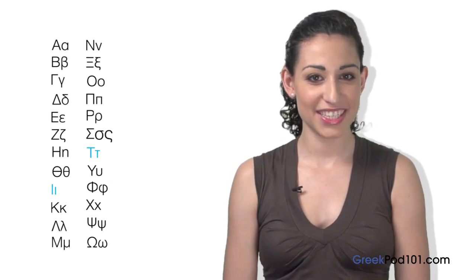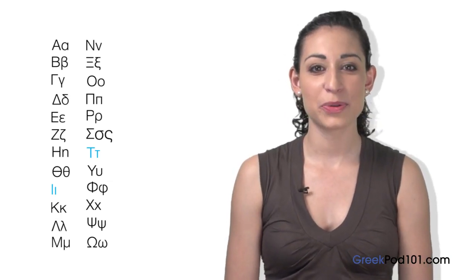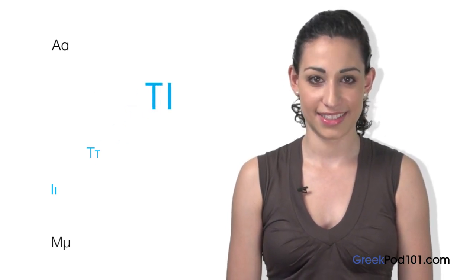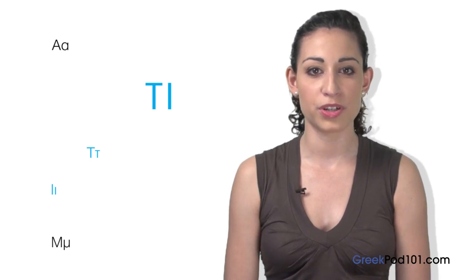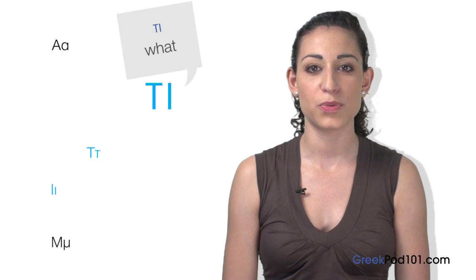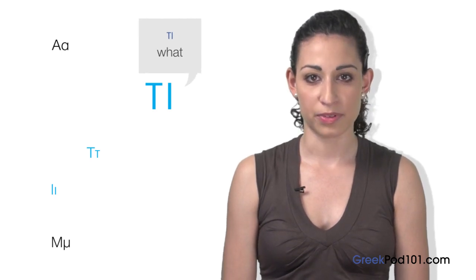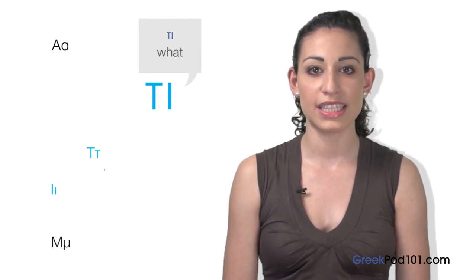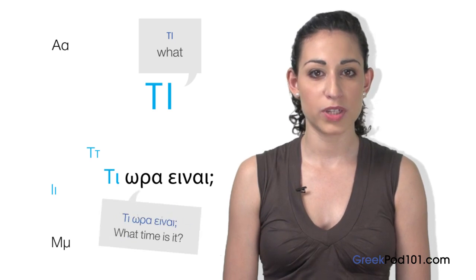All these were pretty easy, weren't they? Let's see what we can do with them. By themselves, Taf and Iota spell only one word in Greek, Ti. Even though it's a very small word, it's very important and used all the time in Greek because it means what. For example, the first word in the question Ti ora inne, which means what time is it?